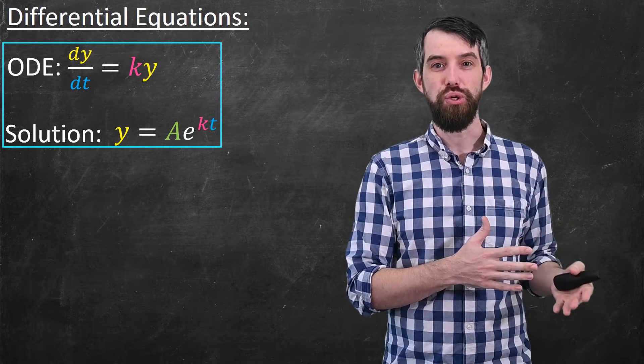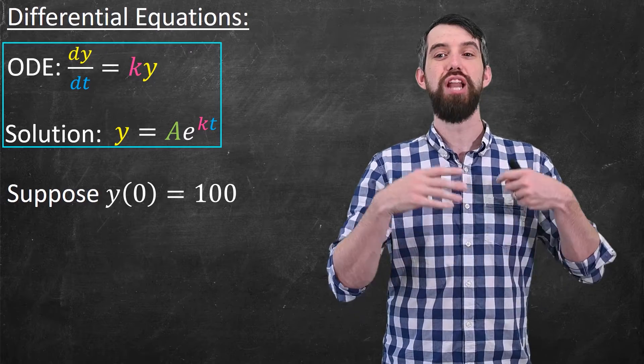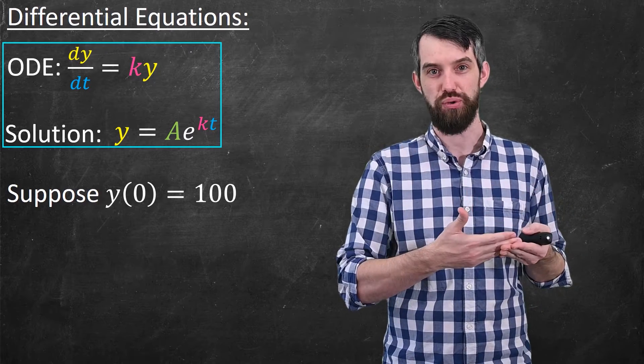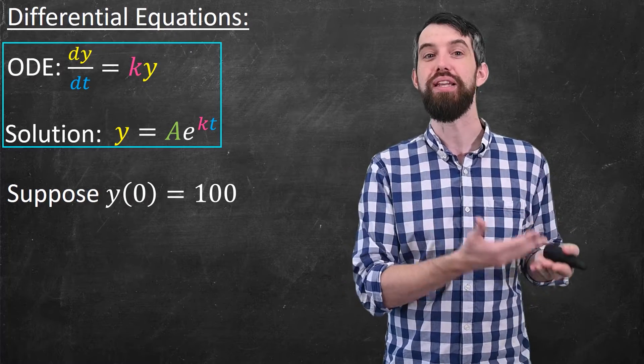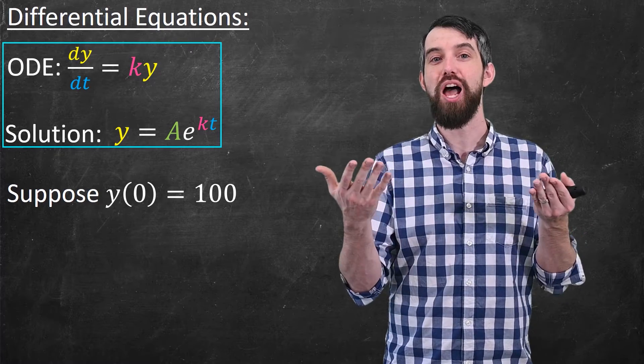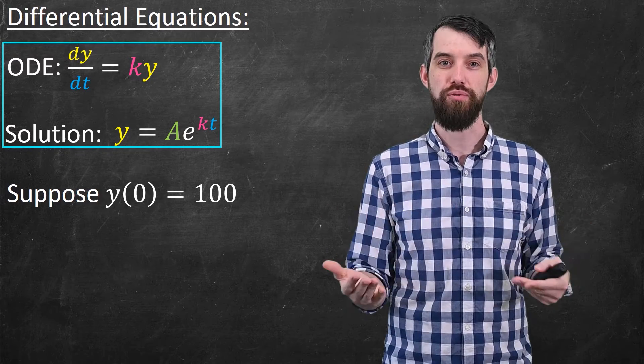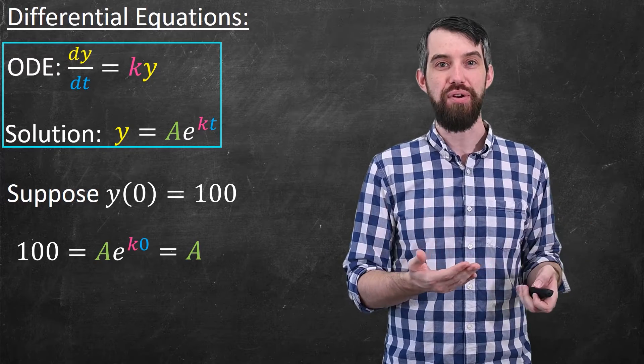The next thing I want to do is imagine that I impose some condition. Imagine I impose that at time t equal to zero, the value of y is 100. This is called an initial condition. It says I'm going to specify one point that at t equal to zero, this is equal to 100.